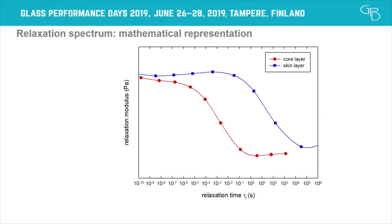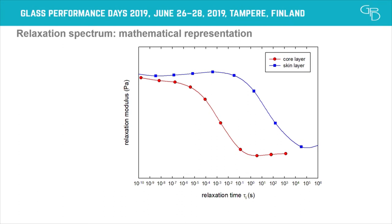Looking at the relaxation spectra for different materials: there is quite a big difference in relaxation time between the pure skin layer and the pure core layer. The measurement on the multilayer system falls somewhere in between, but not exactly on either individual curve — there is a shift, which is representative of the earlier finding that measuring on a multilayer system is not identical to measuring on a single layer system.